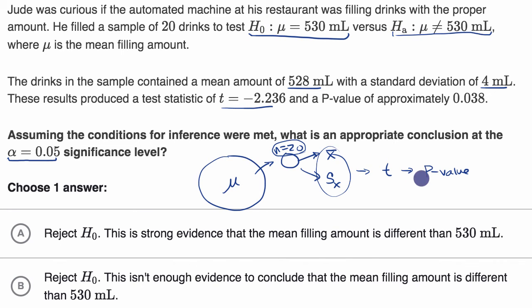So the key to this question is to compare this p-value to our significance level. And as we see, the p-value 0.038 is indeed less than 0.05. And so because of this, we would reject the null hypothesis, which would suggest the alternative, that the true mean is something different than 530 milliliters.